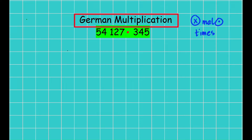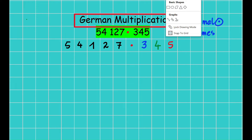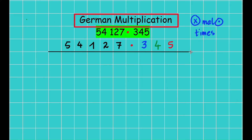So let's start to multiply these two numbers. I would like to write this number first: 54127, and then a point as the multiplication sign in German. I will write the digits in colors — three in blue, four in green, and five in red — so you will understand how we are going to multiply. First of all, I draw a line.